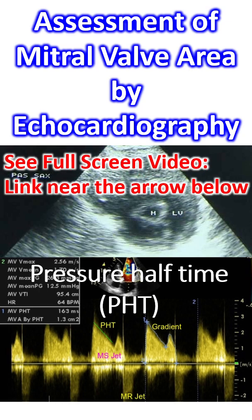Assessment of mitral valve area by pressure half-time involves Doppler echocardiography. A pressure half-time of 220 ms corresponds to a valve area of 1 cm². Pressure half-time is measured from the descent of the E wave in the transmitral Doppler, usually obtained in the apical four-chamber view. It is the time taken for the peak transmitral gradient to fall to half its value.